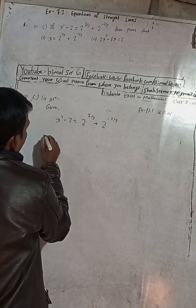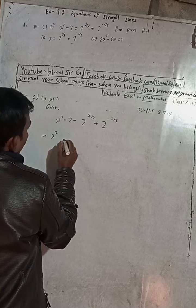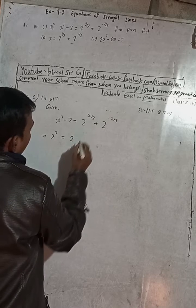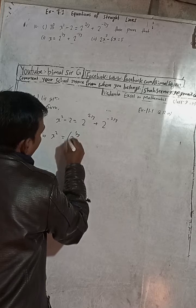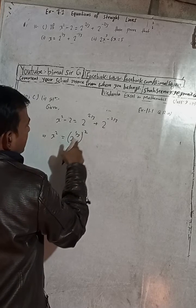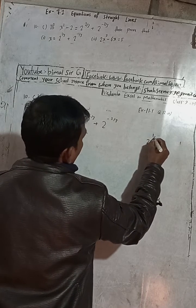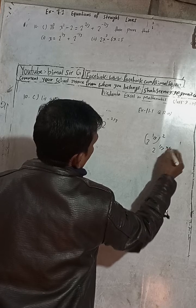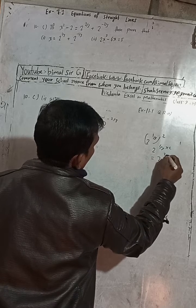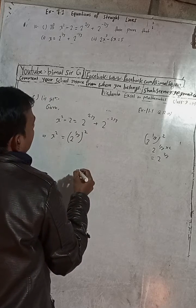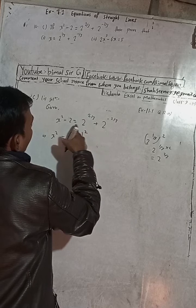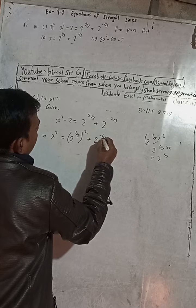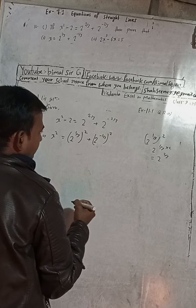So what you can do here — this is x squared, write it as it is. Now, 2 to the power 2 by 3 can be written as 2 to the power 1 by 3 whole squared. The meaning of this is: 2 to the power 1 by 3 whole squared means 2 to the power 1 by 3 multiplied twice, giving 2 to the power 2 by 3. Similarly for the other term: plus 2 to the power minus 1 by 3 whole squared.